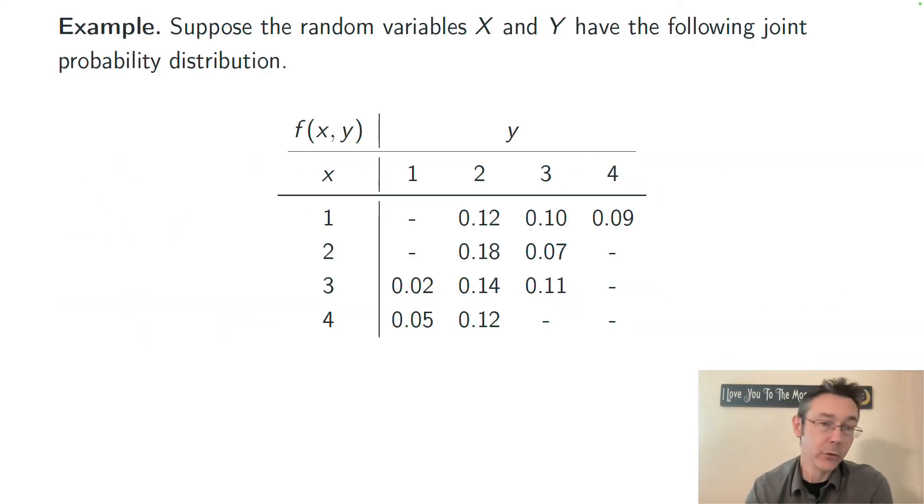Everything gets clearer when we get into an example, so here's one. We have two random variables, X and Y, with this joint probability distribution. What you're seeing in this table is probabilities for the specific combinations of X and Y. These are all AND statements. For instance, the probability that x equals 2 and y equals 3, we're looking in this table for the row where x is 2, that's the second row from the top, and the column where y equals 3. So that's the third column from the left. And so, of course, that is 0.07.